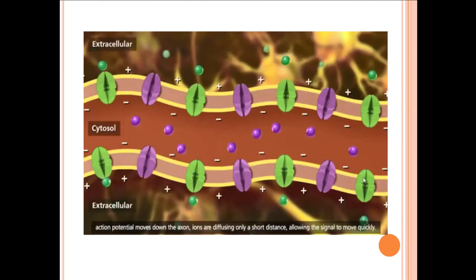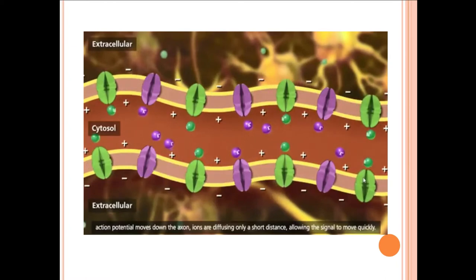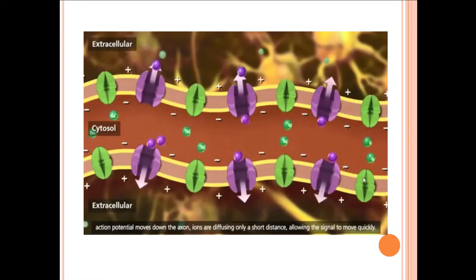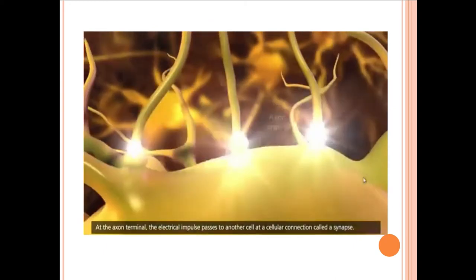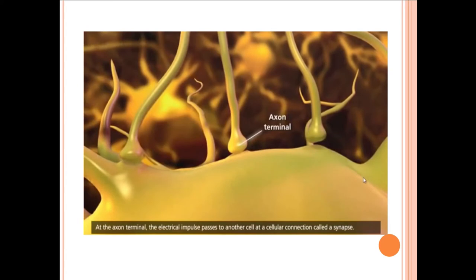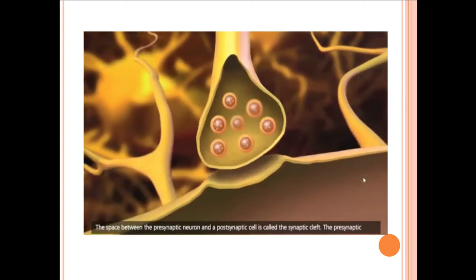As the action potential moves down the axon, ions are diffusing only a short distance, allowing the signal to move quickly. At the axon terminal, the electrical impulse passes to another cell at a cellular connection called a synapse. The space between the presynaptic neuron and a postsynaptic cell is called the synaptic cleft.